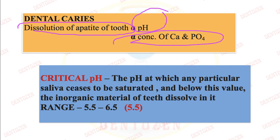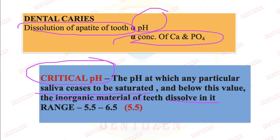If the pH falls far enough and dissolution starts, that pH is called critical pH — another important question. Critical pH is the pH at which the saliva ceases to be saturated with calcium phosphorus, so it can no longer protect the tooth. Below this value, inorganic calcium phosphate ions begin to dissolve from the teeth. The critical pH is 5.5 (range 5.5 to 6.5), but for viva purposes, the answer is 5.5.